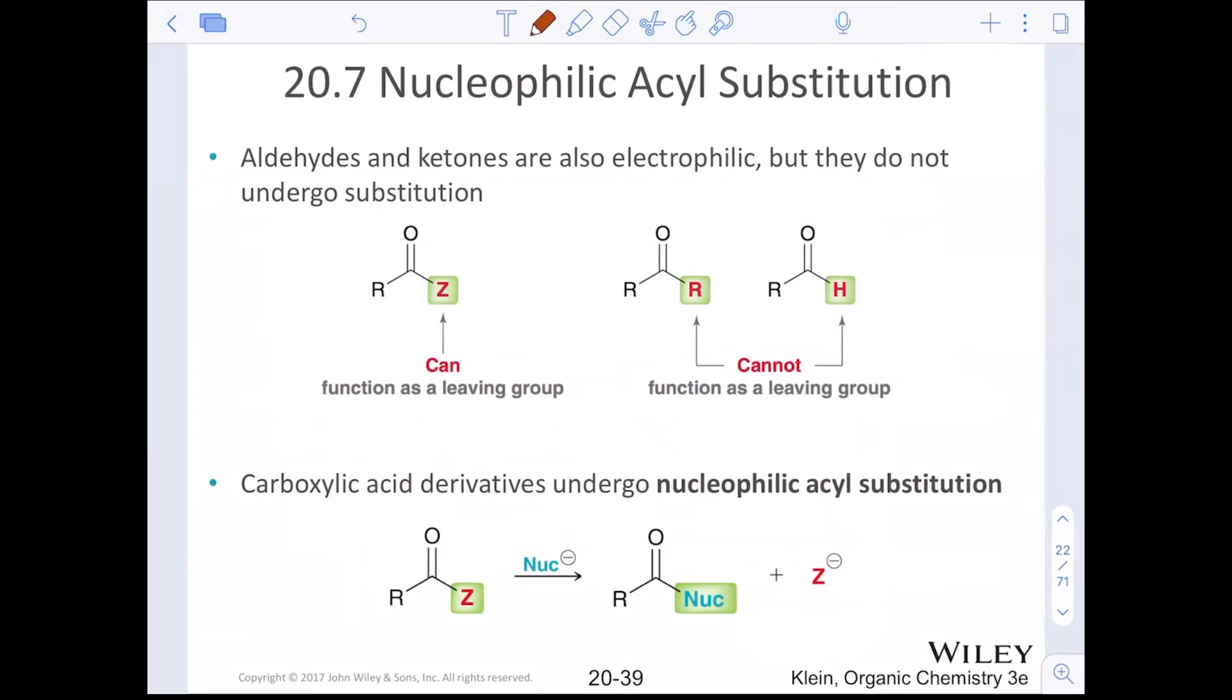Aldehydes and ketones are also electrophilic, but they do not undergo substitution. We saw how these groups can be added to—we can add to the carbon-oxygen double bond in aldehydes and ketones. However, now we have leaving groups in our carboxylic acids and their derivatives. So they can actually undergo what we call nucleophilic acyl substitution. Acyl is a common name for the carbonyl group. Whatever we've abbreviated Z—the leaving group—that could be the chlorine, the oxygen of the ester, the oxygen of the anhydride, or the nitrogen of the amide. All of those can undergo a substitution reaction instead of just an addition.